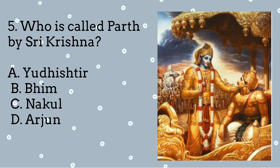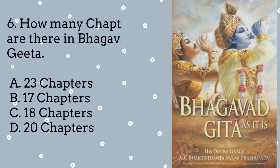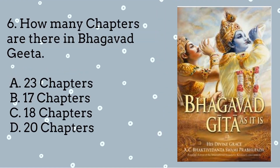How many chapters are there in the Bhagavad Gita? A. 23 chapters. B. 17 chapters. C. 18 chapters. D. 20 chapters.